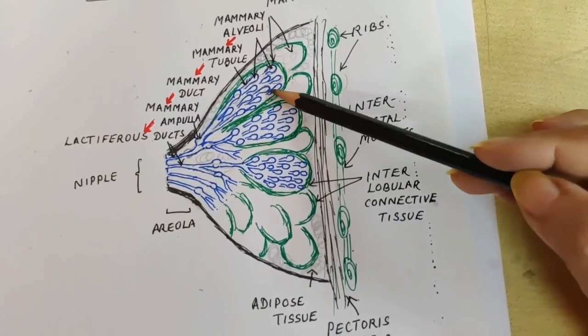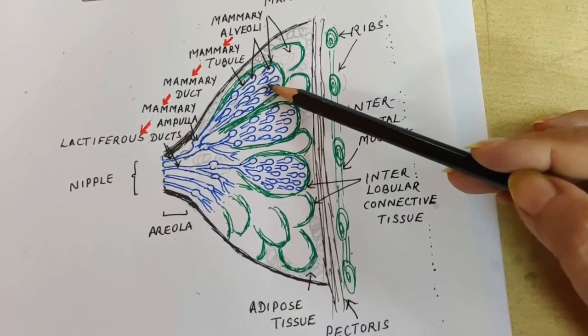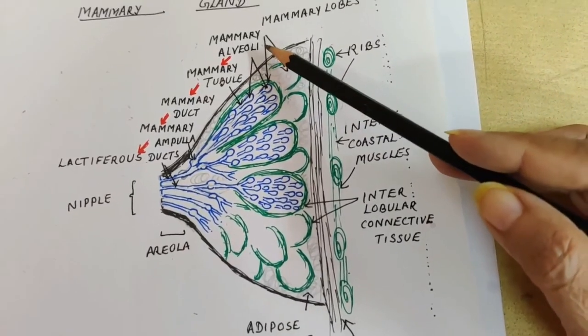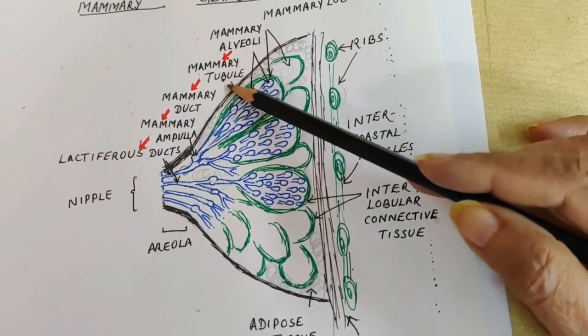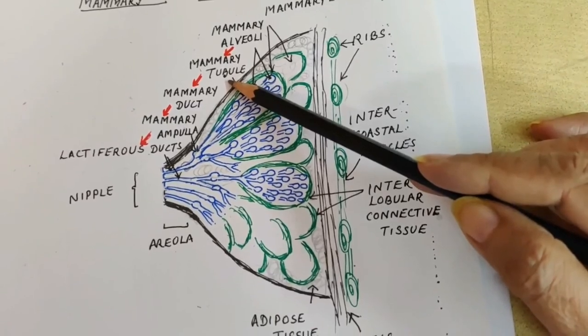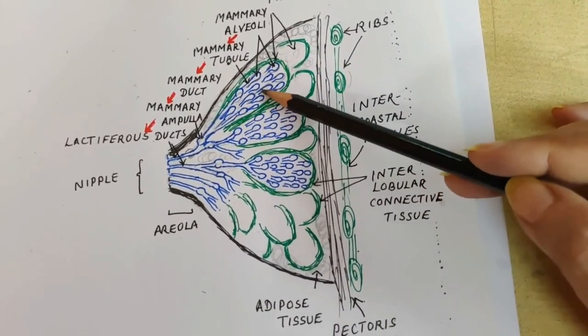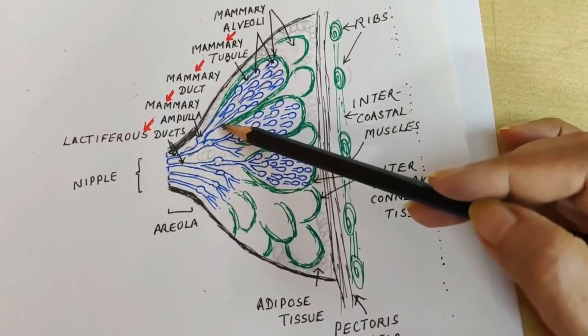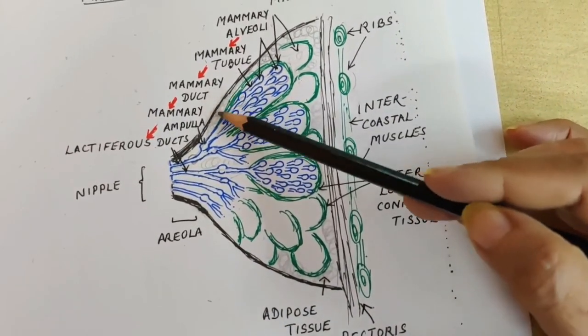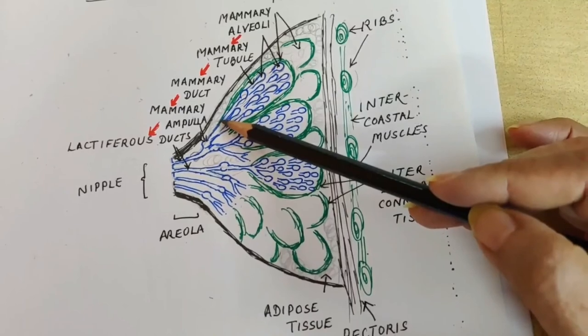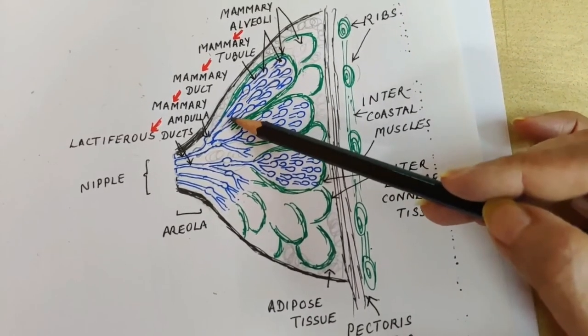the adipose tissue. These alveoli, each of them, is pouring the secretion into their own tubule. From there, all the tubules collect the milk and pour it into a mammary duct. Mammary ducts coming from